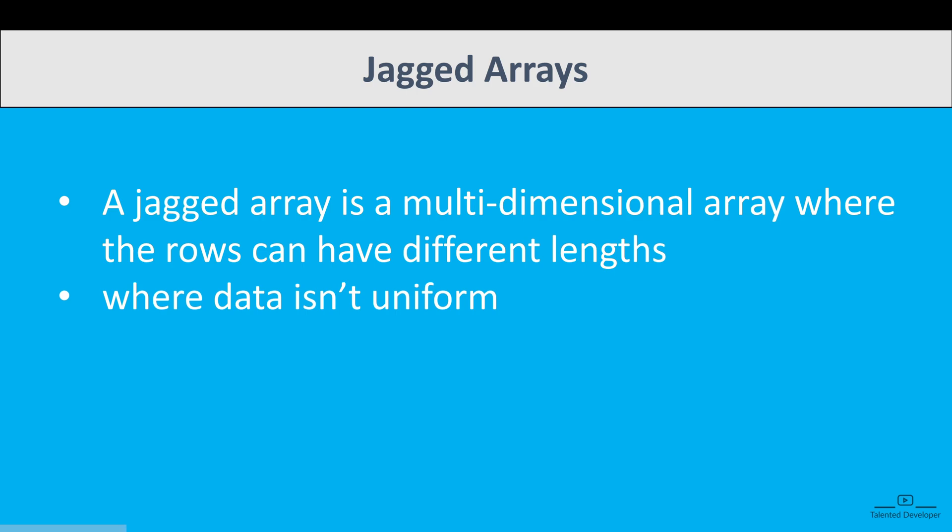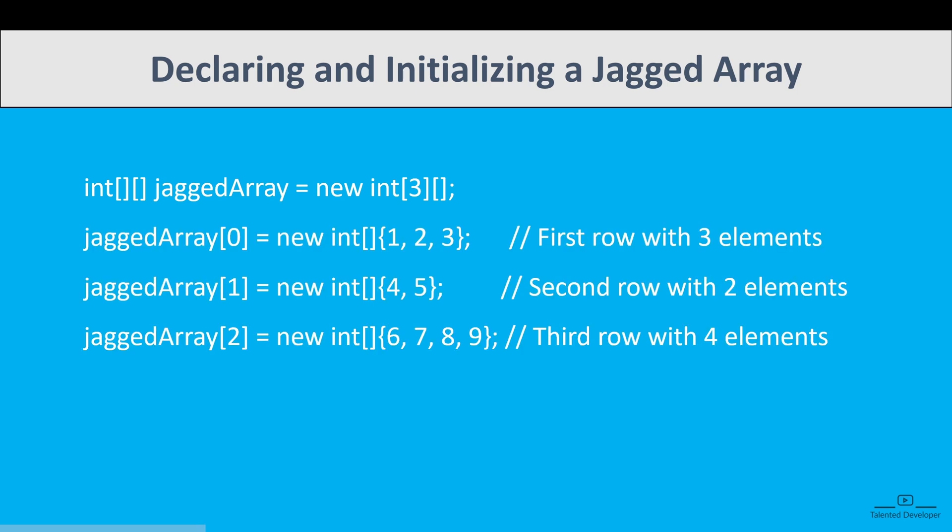If you don't know anything about 2D arrays, please watch the earlier videos. How can we declare and initialize a jagged array? As I told you, the rows can have different sizes. A jagged array is declared as a two-dimensional array—the type is int with two square brackets—but it's jagged because the second dimension, the size of each sub-array, is not specified. The outer array has a fixed size of three, which means it will hold three sub-arrays.